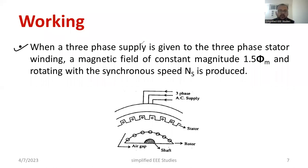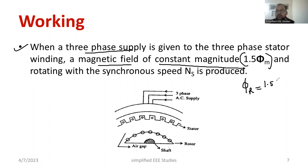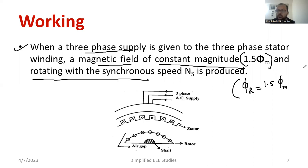Whenever a three-phase supply is given to the three-phase stator winding, a magnetic field of constant magnitude is produced — that magnitude is 1.5 into φm, meaning the total magnetic flux is 1.5 × φm — and that rotates with synchronous speed. Synchronous speed is the speed of the rotating magnetic field. The value of the rotating magnetic field is φr = 1.5 × φm, where φm is the maximum amount of flux.